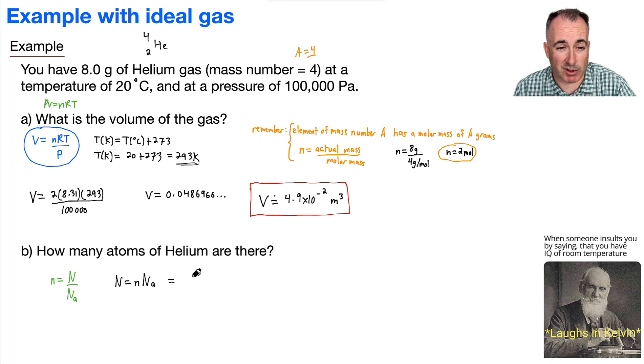What's that going to be? It's going to be the number of moles, which we said was 2, all that times Avogadro's number, which is just 6.02 times 10 to the 23. That's how many atoms in one mole.